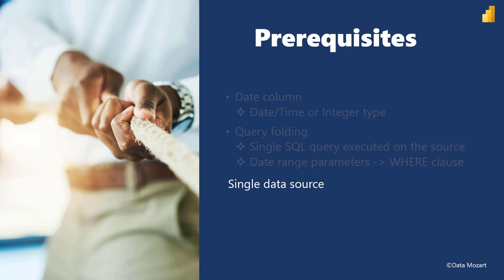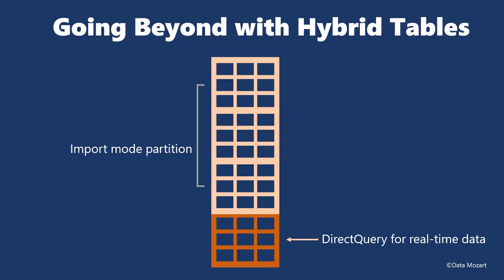A Single Data Source means all your partitions must query data from a single source. But there is more: by leveraging the Hybrid Tables feature, you can enhance the data refresh process even further. The idea is to set up Incremental Refresh for the table but configure the partition with the most recent data in Direct Query mode, while keeping older data in Import mode. This way you get the best of both worlds — blazing fast performance for analytic queries over older data and real-time synchronization with the latest data. However, the Hybrid Tables feature is currently available only with Power BI Premium licenses.